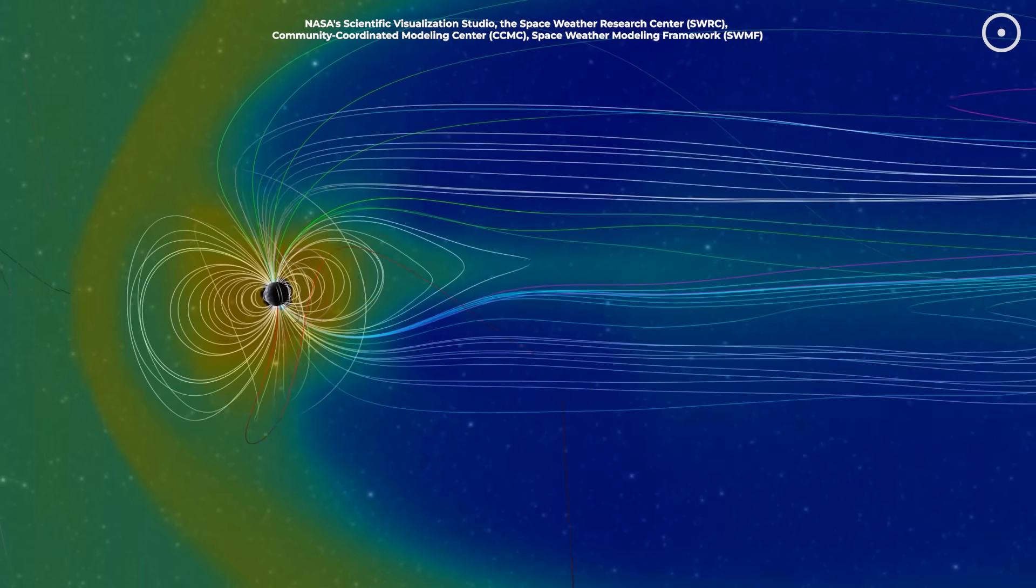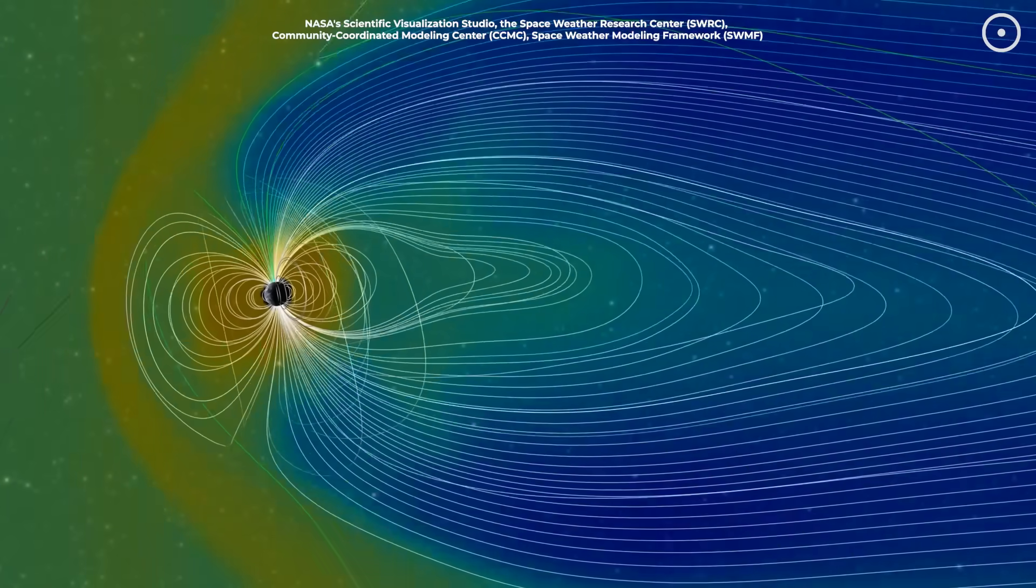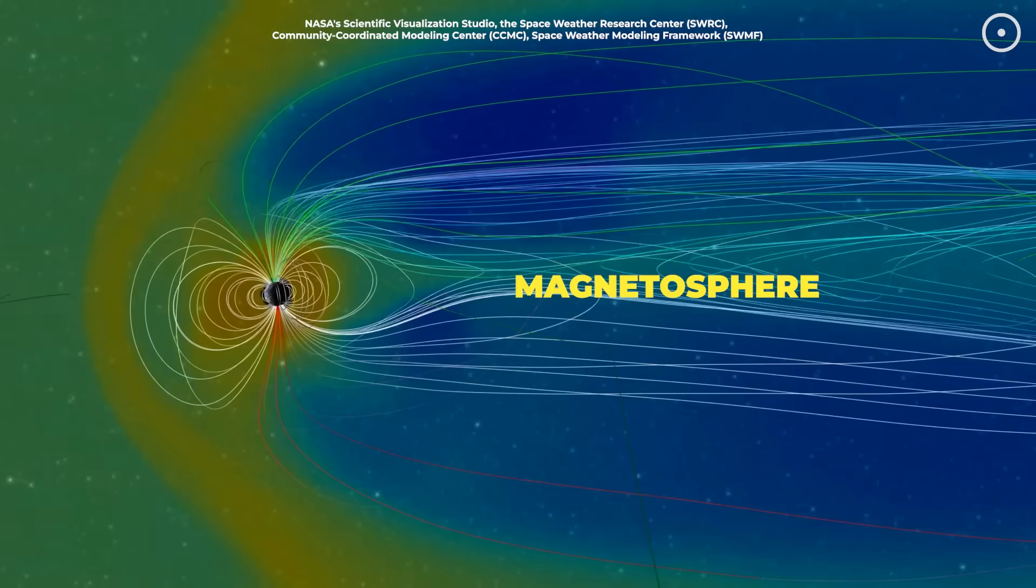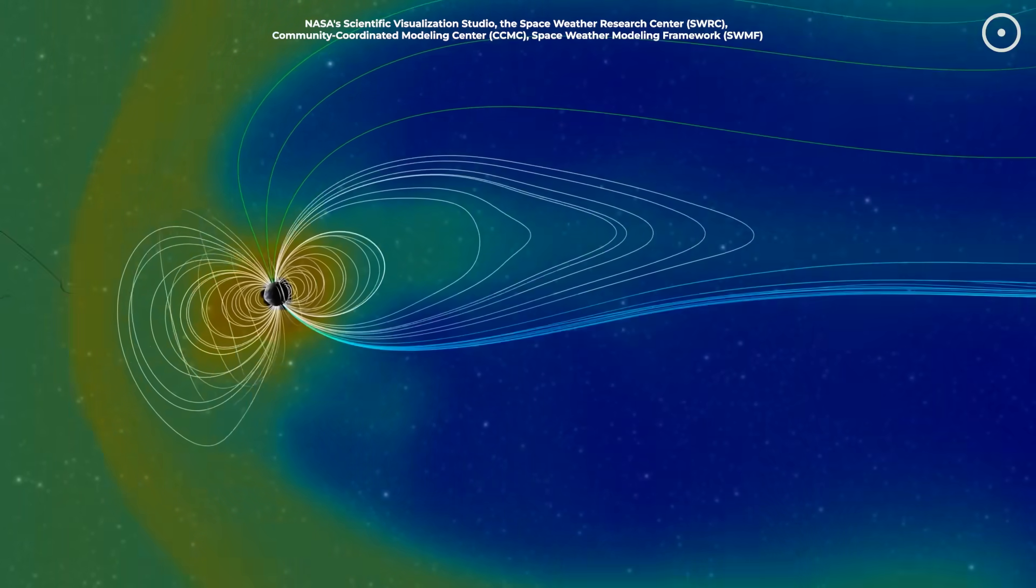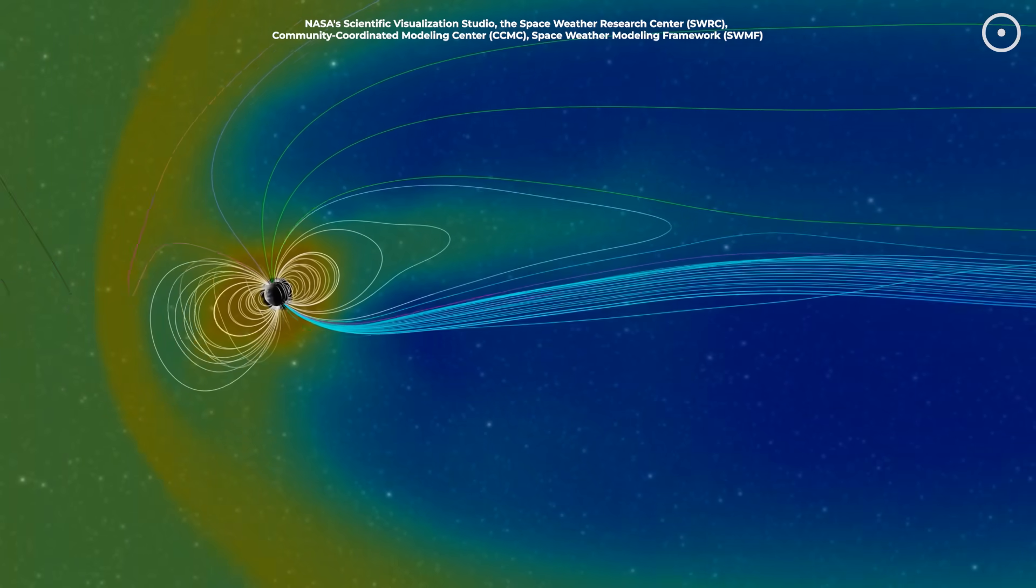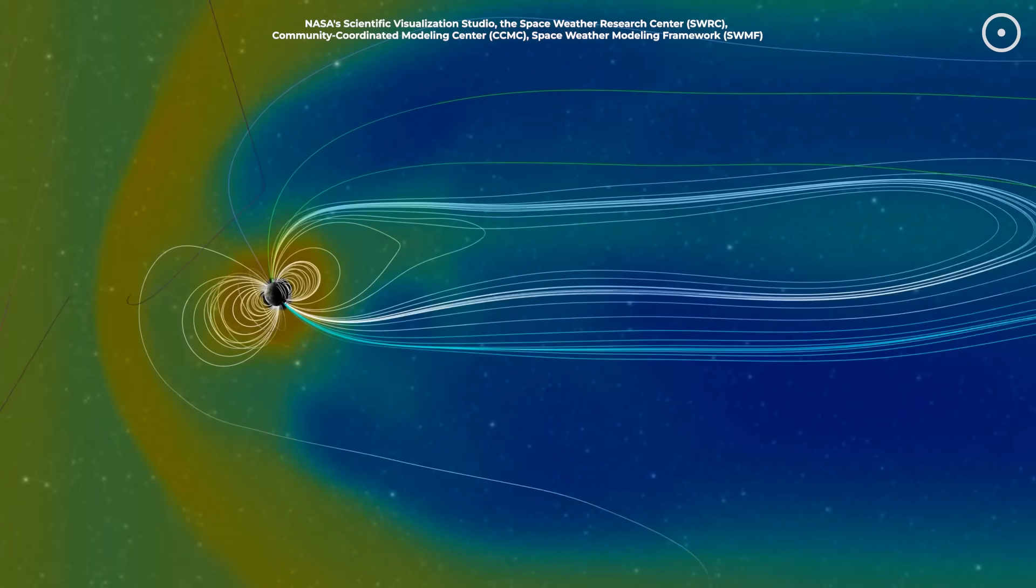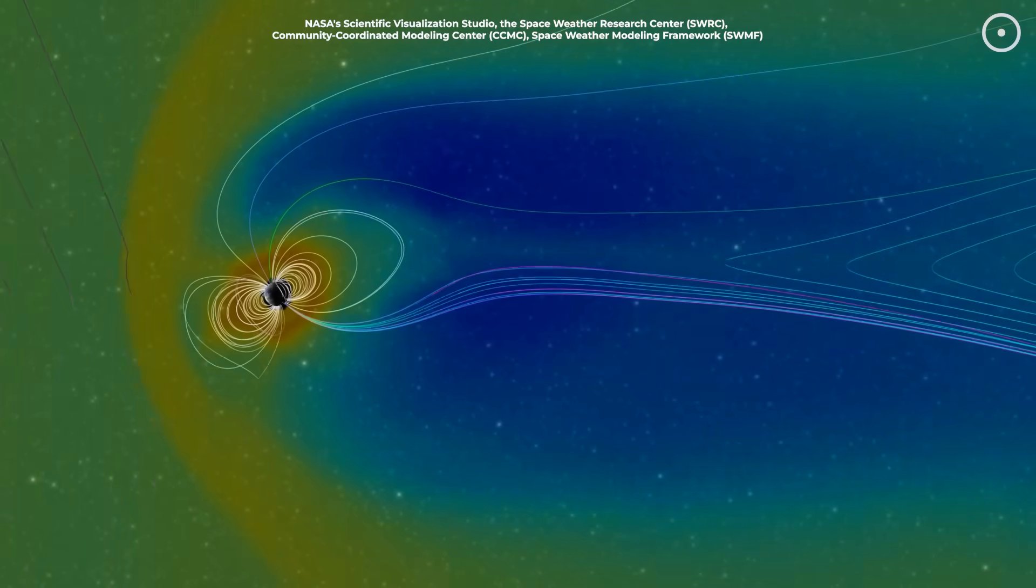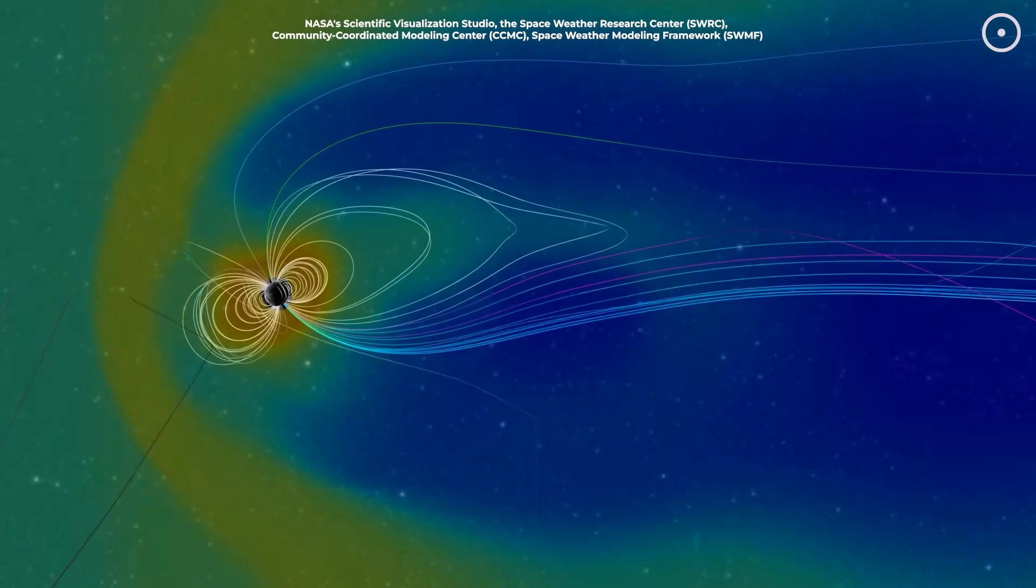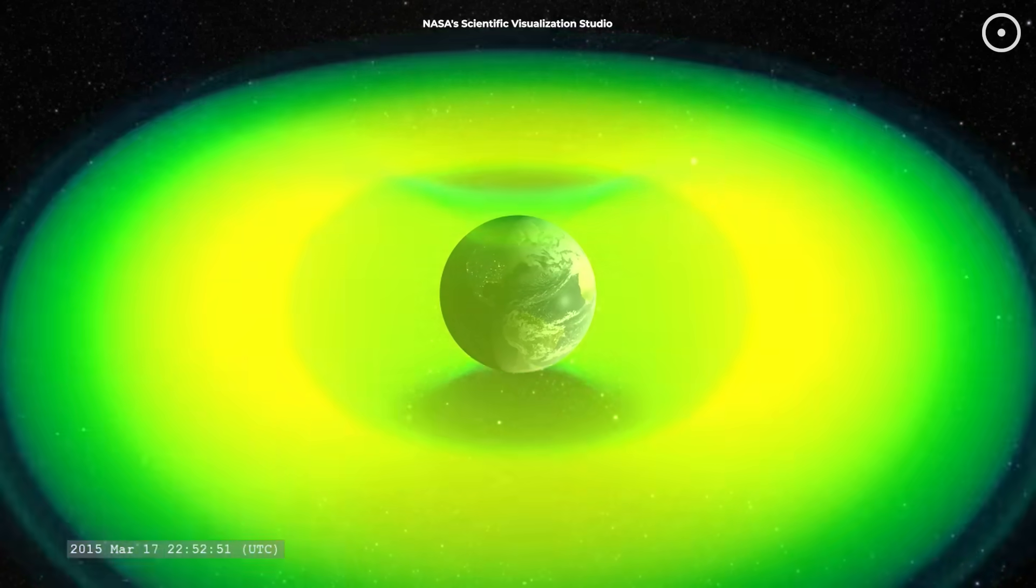The spinning metal creates a magnetic bubble around Earth called the magnetosphere. It's not a perfect sphere though, it's more like a windsock in space. The solar wind, a stream of charged particles from the sun, compresses it on the day side and stretches it into a long tail on the night side.